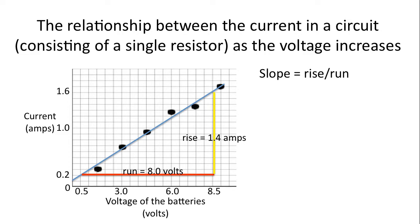So, let's calculate the slope now. Slope is rise over run. 1.4 amps over 8.0 volts. That works out to be 0.175 amps per volt.